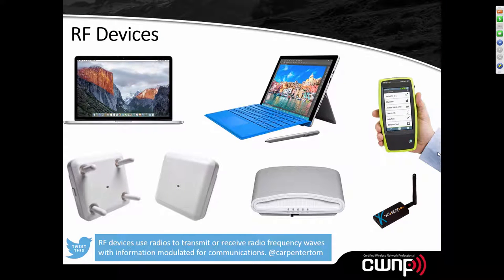The first part of the wireless LAN hardware puzzle is RF devices. RF devices use radios to transmit or receive radio frequency waves with information modulated for communications. 802.11 RF devices use radio frequency waves in the 2.4 and 5 GHz frequency bands, some at 60 GHz and some at 900 MHz, modulated based on the physical layer specifications defined in the 802.11 standard. These devices include laptops, tablets, access points, and support devices.